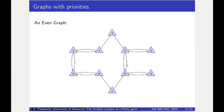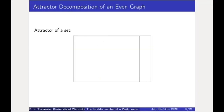So an even graph is a graph where every cycle is even. Given an even graph, we will define something called its attractor decomposition that will serve as a witness to its evenness. Before we do that, let me define what an attractor of a set is. Given a set, we say that the attractor of the set is just the set of all vertices from which all paths eventually lead to a vertex in this set.